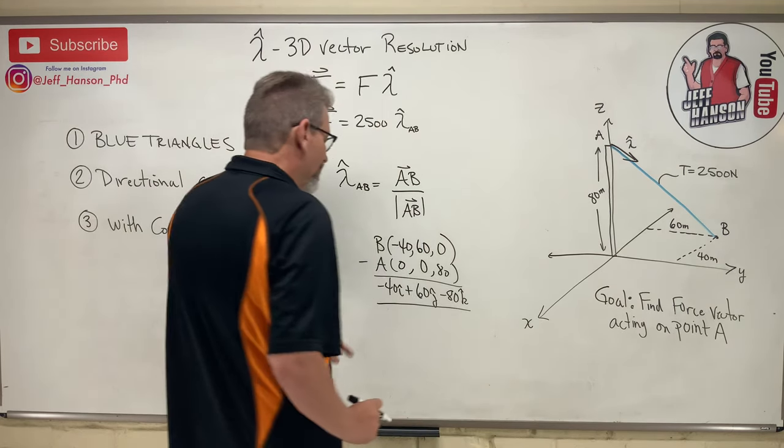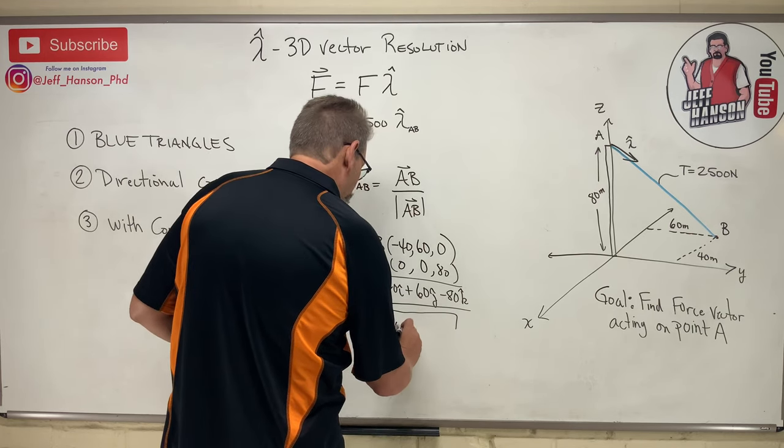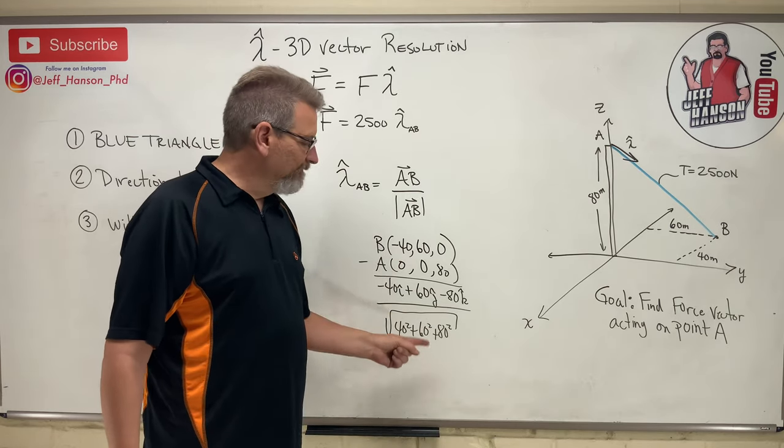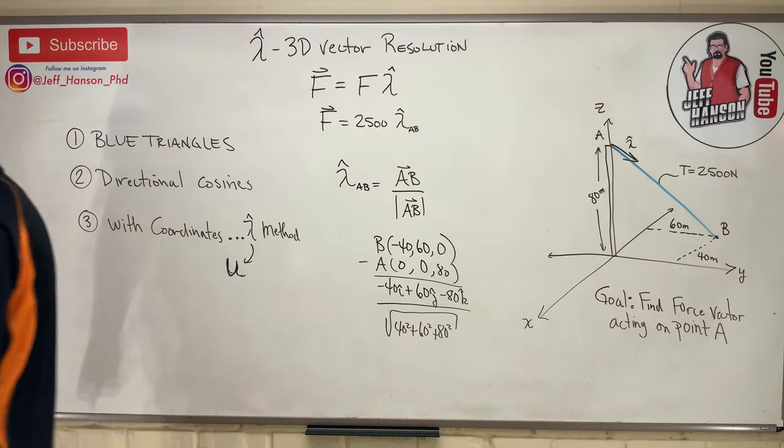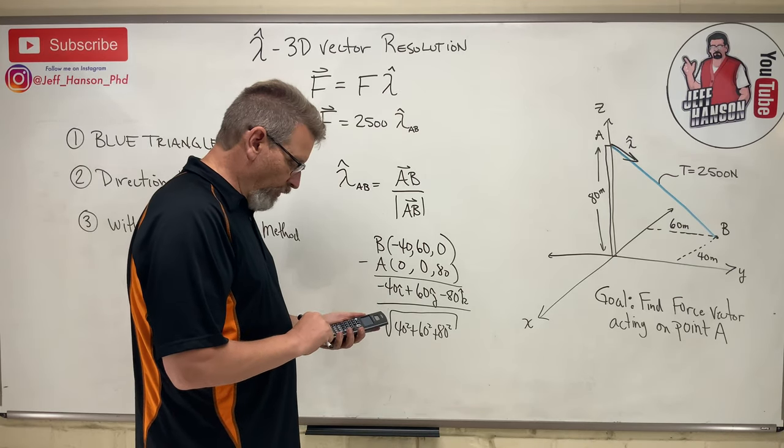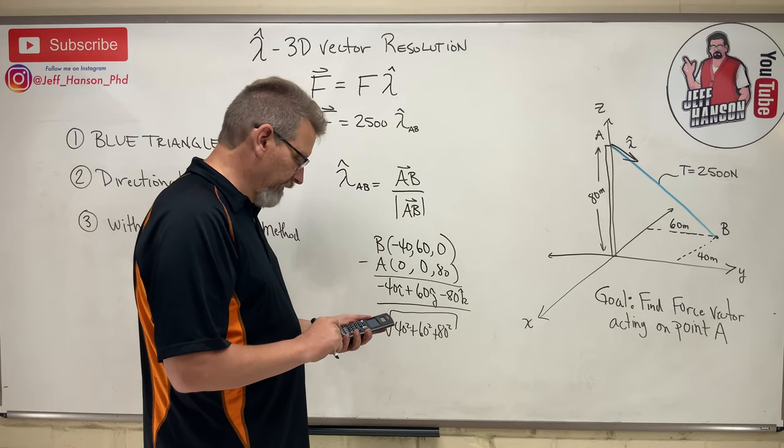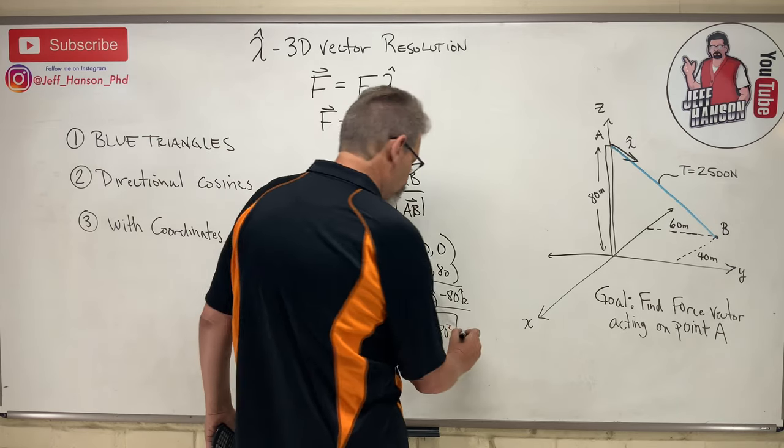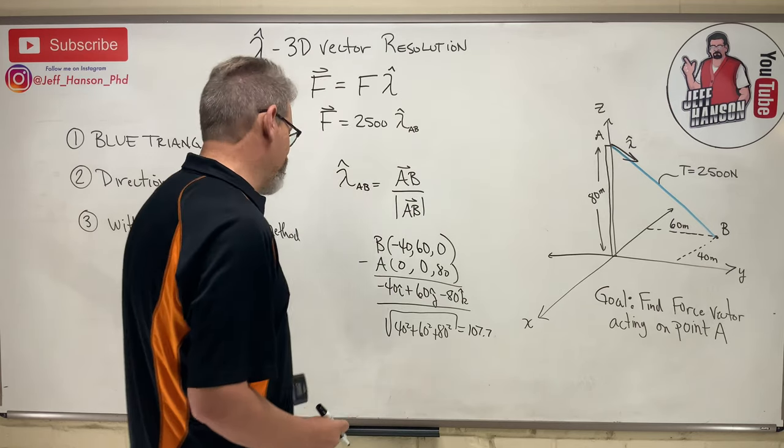Next, divided by the magnitude of vector AB. So divided by 40 squared plus 60 squared plus 80 squared. Look how careless I was with my signs there. It doesn't matter. You're squaring them all, they're all going to go positive anyway. So 40 squared plus 60 squared plus 80 squared equals square root of the answer, 107.7.